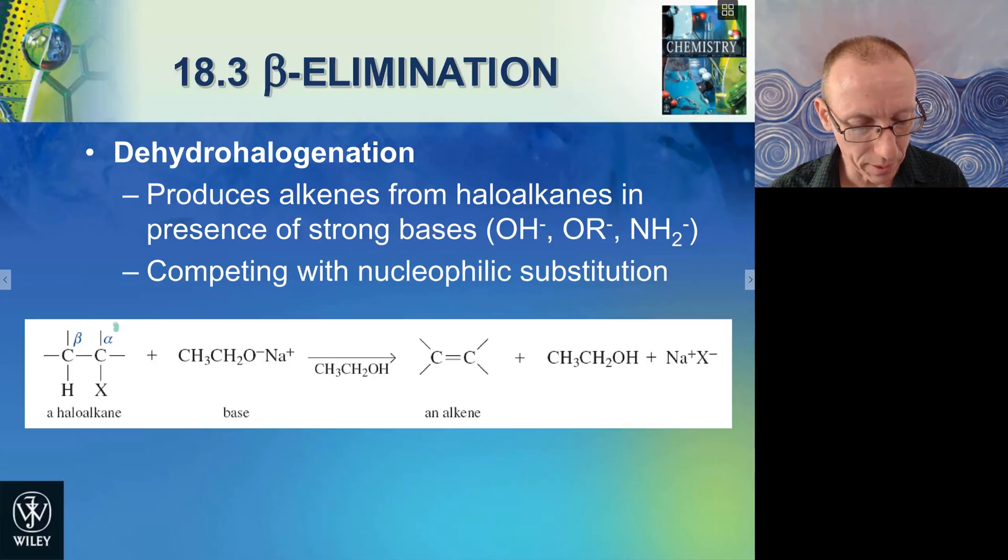So for example, if we have a haloalkane like this one here and we treat it with sodium ethoxide, which is formed from ethanol by treating it with little chunks of sodium, you get this strong nucleophile which is also a strong base. It will not only act as a nucleophile, but it will also pull off the proton here, electrons go over here, and then we kick out the leaving group, and we end up making an alkene plus an alcohol from the alkoxide and an inorganic salt as a byproduct.